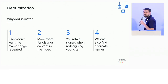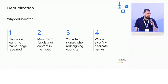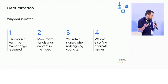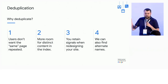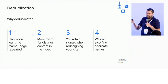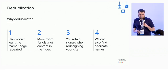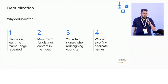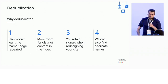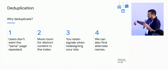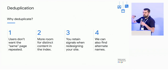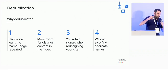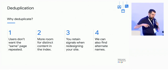So why do we do this? The most intuitive answer is that search users don't want to see the same result 20 times — the same page over and over again. That's not a very good search experience. The second reason is that once you've removed all these pages, you get a bunch of space back in the index so you can serve more unique results and start handling long-tail queries.